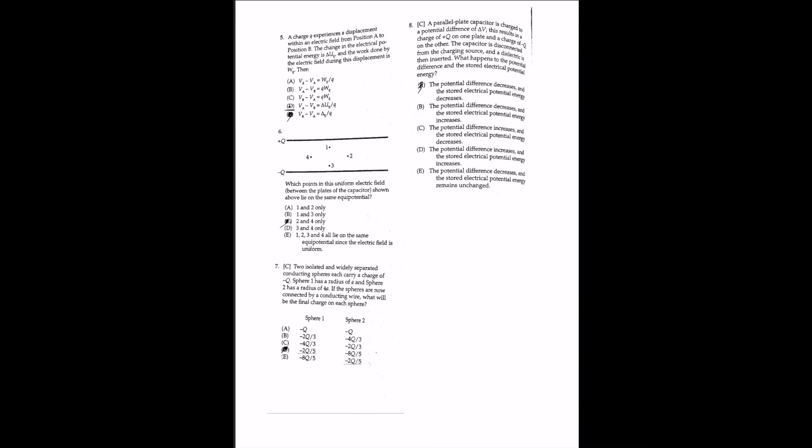For question 5, a charge q experiences a displacement within an electric field from position A to B. The change in electric potential energy is ΔUₑ and the work done by the electric field is Wₑ. The answer is E. By definition, the potential difference is ΔV = ΔU/q, where V final is V_B and V initial is V_A, giving V_B − V_A = ΔU/q.